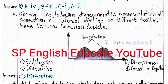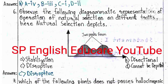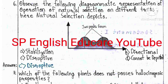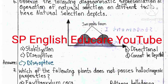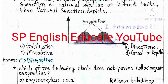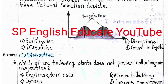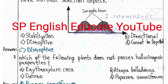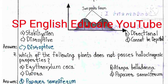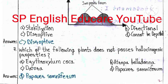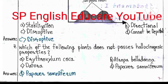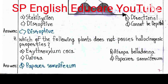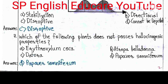Question 6: Observe the diagrammatic representation of the operation of natural selection on different traits. The natural selection depicted is: A) Stabilization, B) Directional, C) Disruptive, D) Cannot be determined. The answer is A — Disruptive.